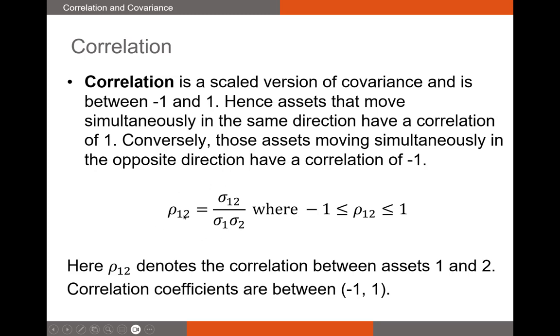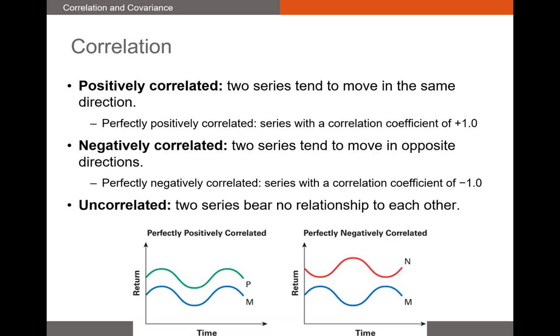When I mentioned that correlation is scaled covariance, what I really mean is that we just take the covariance and divide that covariance by the standard deviation of our first asset and multiplied by the standard deviation of our second asset. And that'll get us our correlation. So we have correlation here, covariance between assets one and two here, and down here we have the individual standard deviations of the two assets.